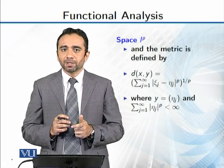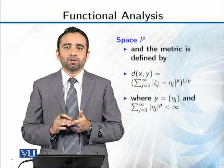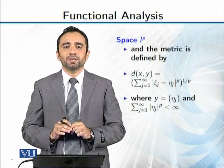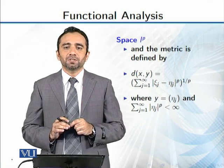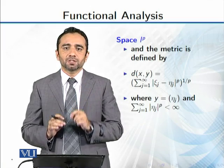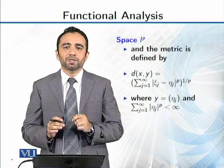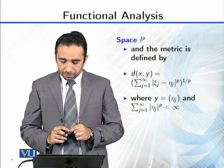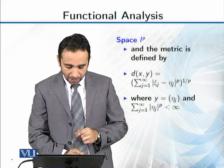What we do not check in this example? That there are four axioms. We do not verify one by one, but this does satisfy these four axioms. That means this set along with this distance function will form a metric space. This is a metric space when you have this l^p.